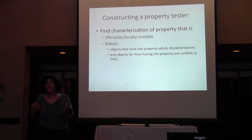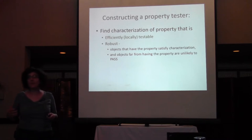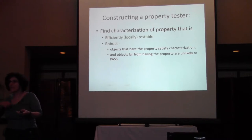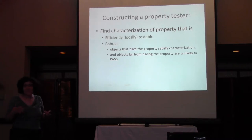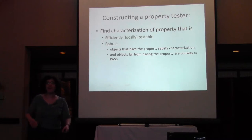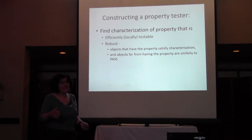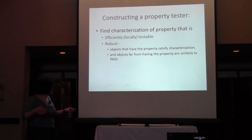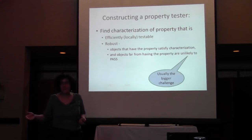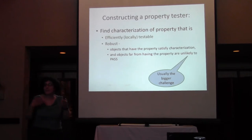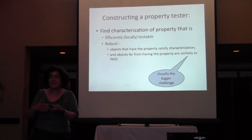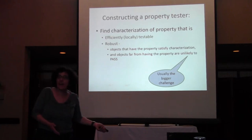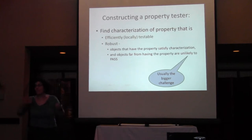How do these property testers work? First, you have to find some kind of characterization of the property that is efficiently testable — often called locally testable — usually via random sampling. You need this property to be robust. Objects that have the property should satisfy this characterization. And this characterization should fail objects that are far from having the property: any object that's far from having the property should be very unlikely to pass these types of algorithms. Usually that's the bigger challenge — you need to prove that if an input is likely to pass the characterization, then it is actually close to having the property.